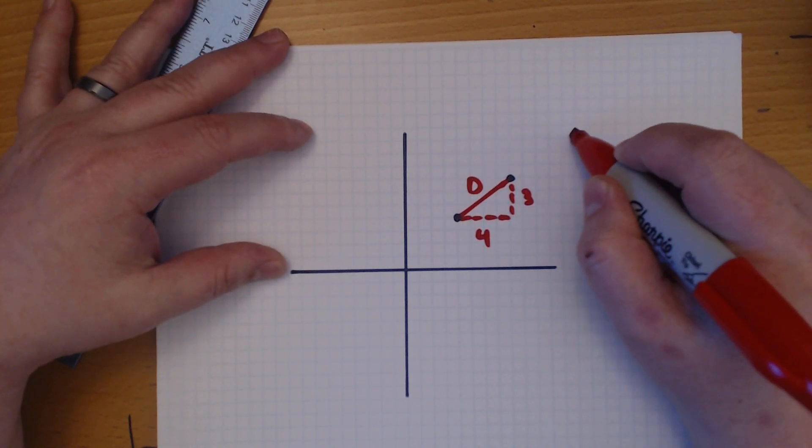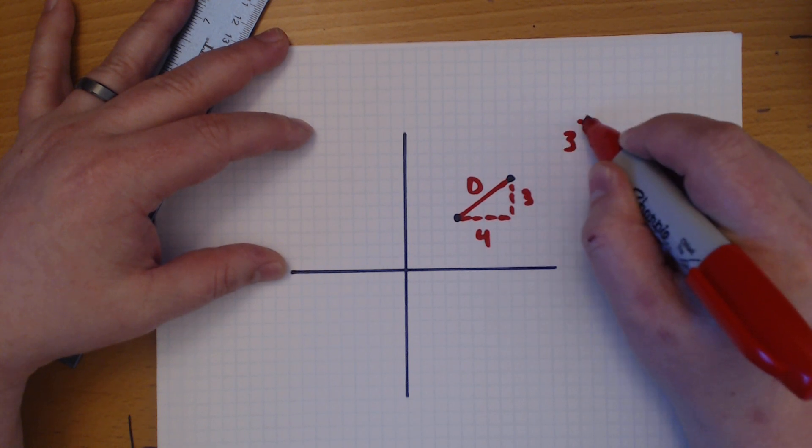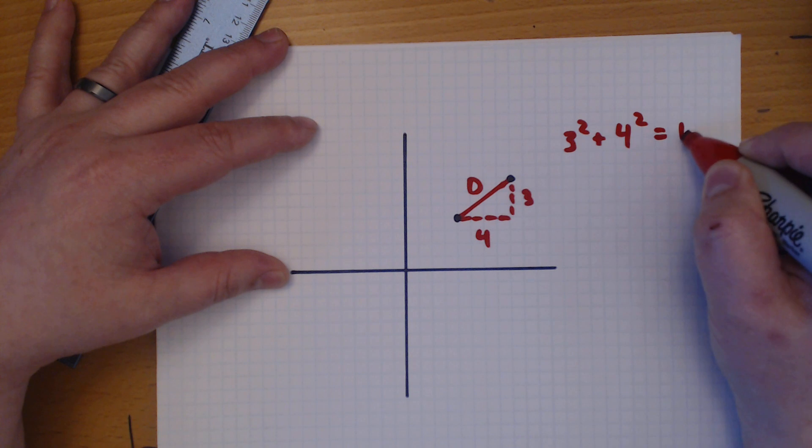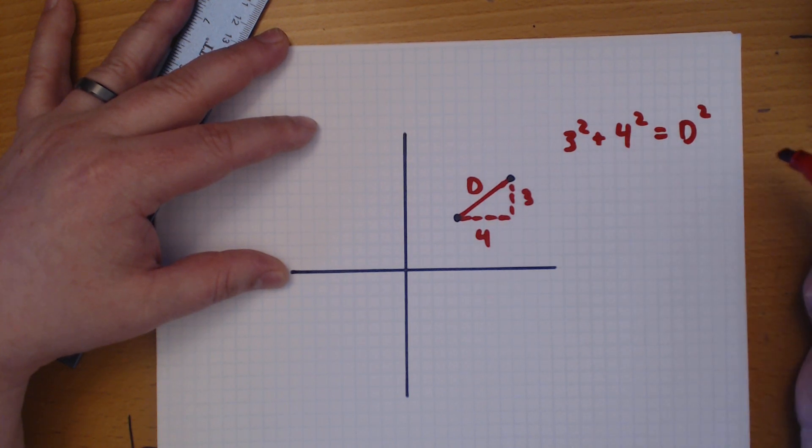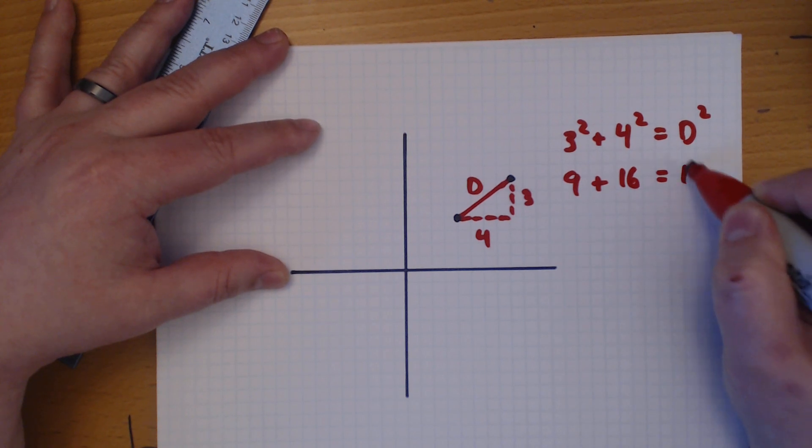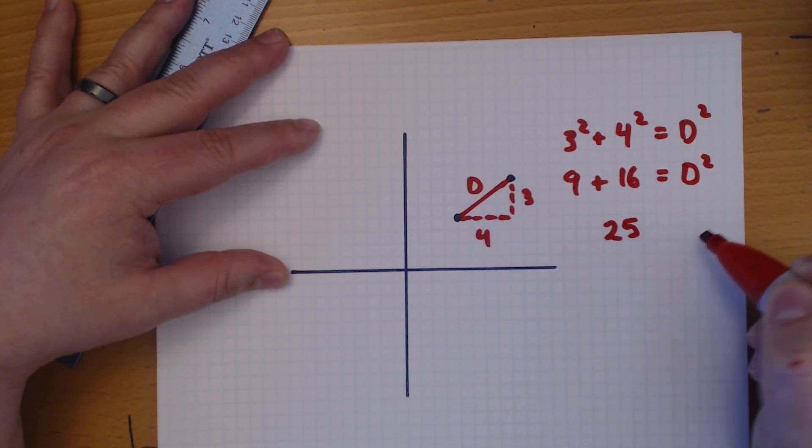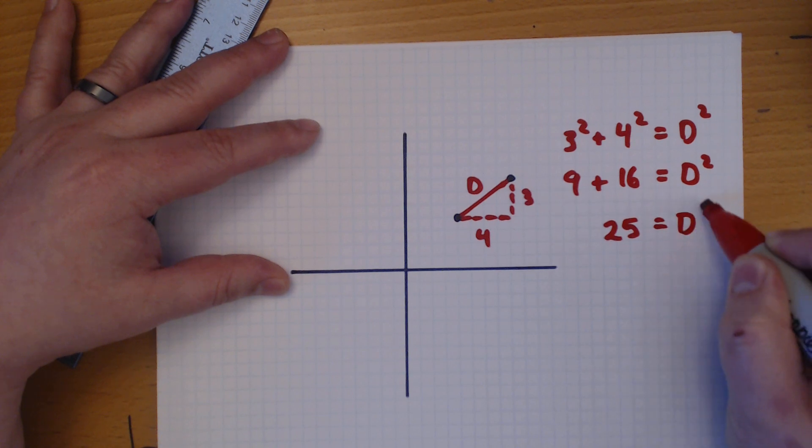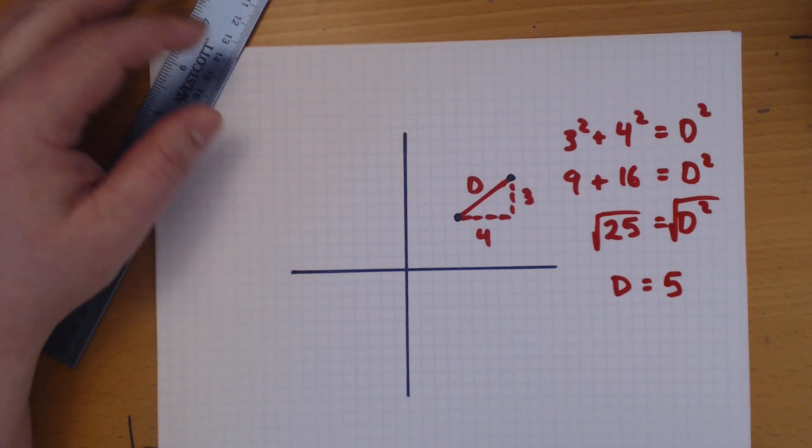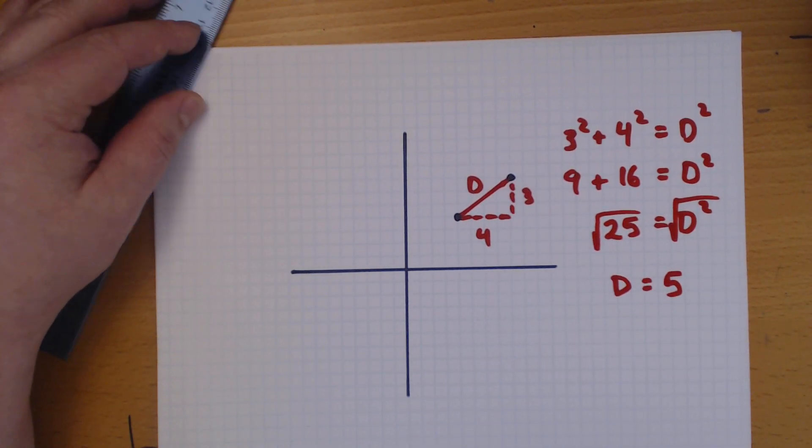So, we have 3 squared plus 4 squared is D squared. 9 plus 16. 9 plus 16 is 25. And remember, don't forget the square root. And there you go.